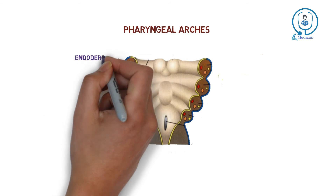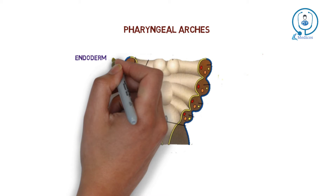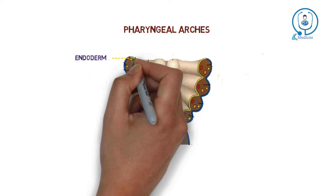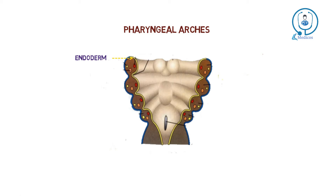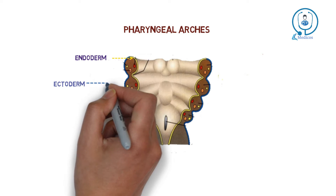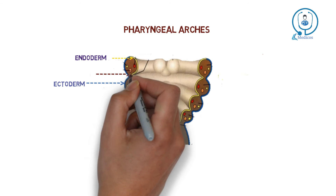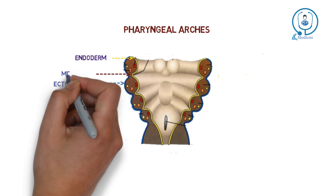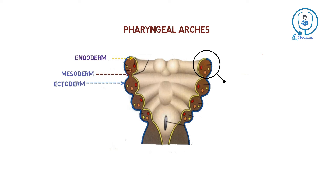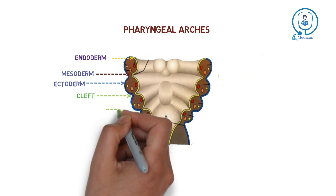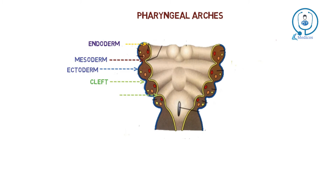Each pharyngeal arch is formed by three germinal layers. The first is endoderm, which forms the inside of the pharyngeal arches, indicated by the yellow line. Ectoderm forms the outside of the arches, indicated by the blue line. In between the two there is mesoderm. Each pharyngeal arch has its own blood supply and nerve supply. Between two pharyngeal arches there is a cleft on the ectodermal side and a pouch on the endodermal side.